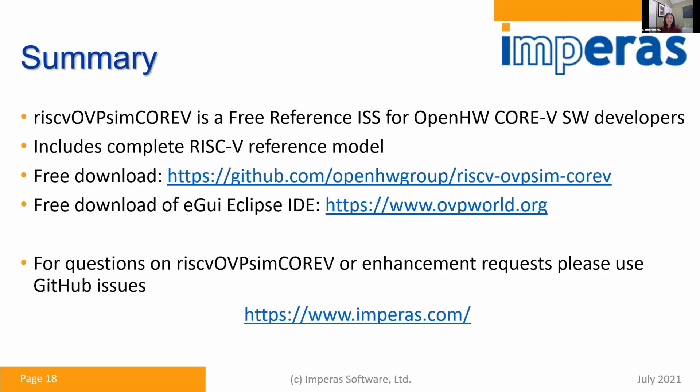In summary, we provide a free reference ISS instruction set simulator for Open Hardware Core 5 variants. It includes the complete RISC-V reference model, supported actively by InParis. Go to the GitHub for a free download. It includes GDB and Eclipse for debugging. Go to ovpworld.org — the open source site run by InParis — for download of the Eclipse IDE. For questions, contact me, send questions on OVP World, or come to our website. That's the end of my discussion — I think we have some time for questions and answers.